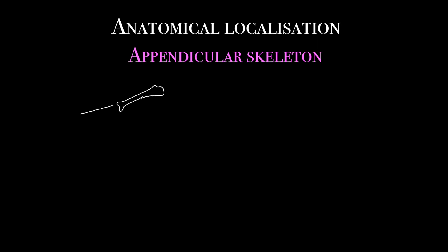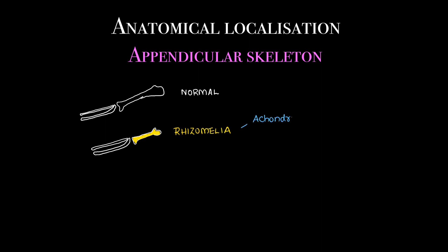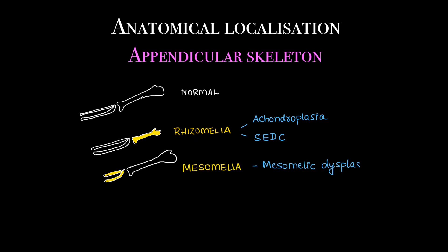Coming to the appendicular skeleton, it is important to know which segment of the upper or lower limb is involved. If the proximal segment — that is the humerus or femur — is shortened, it is called rhizomelia, seen in conditions like achondroplasia or spondyloepiphyseal dysplasia congenita. If the middle segment — radius, ulna, tibia, or fibula — is involved, it is called mesomelia, seen in mesomalic dysplasia. If both the proximal and middle segment are shortened, it is called micromelia, seen in conditions like achondrogenesis.